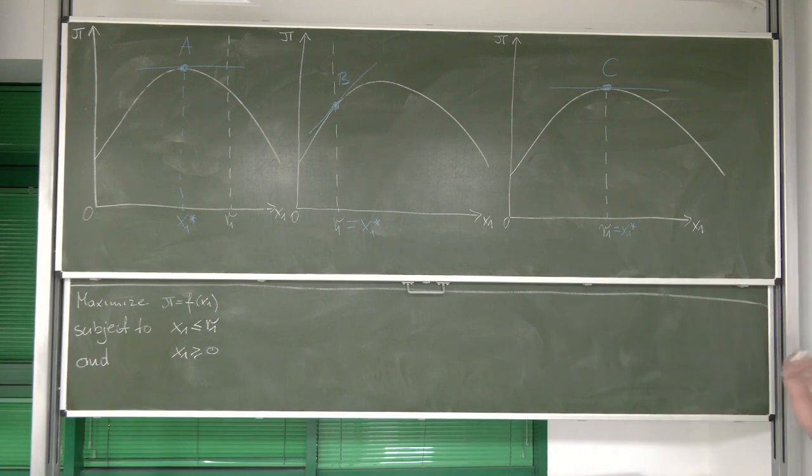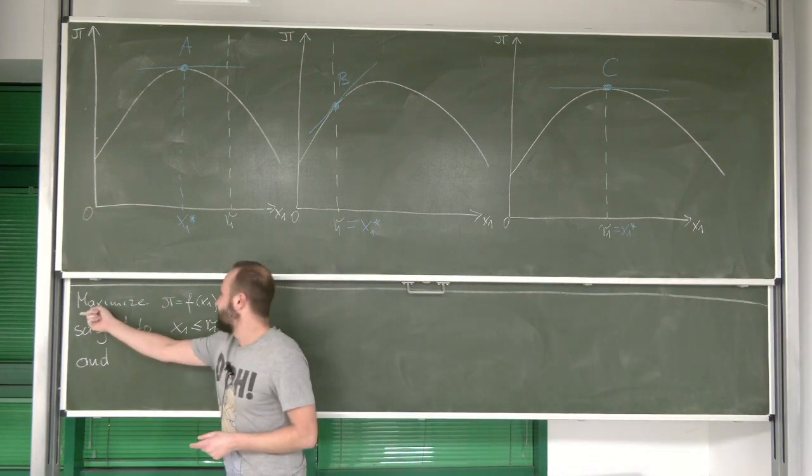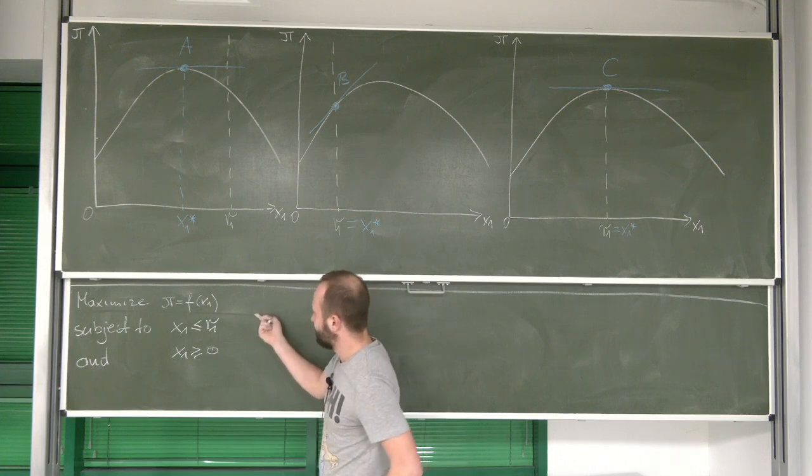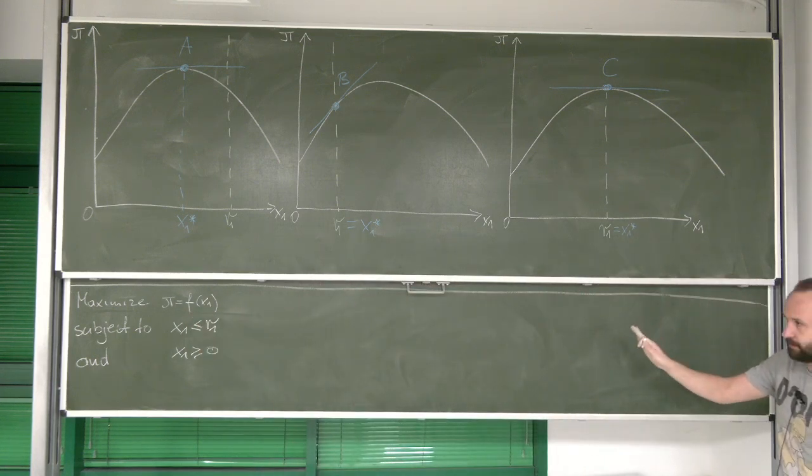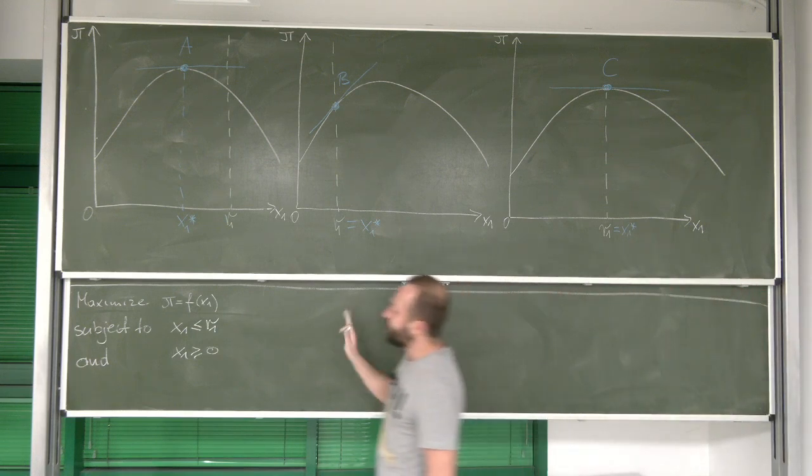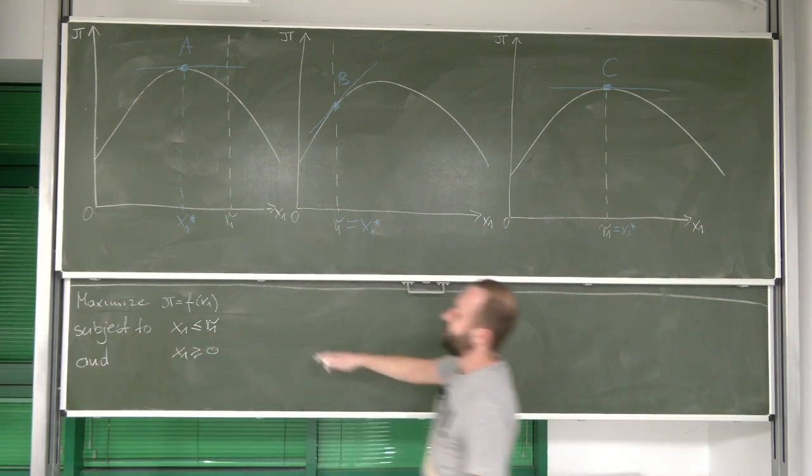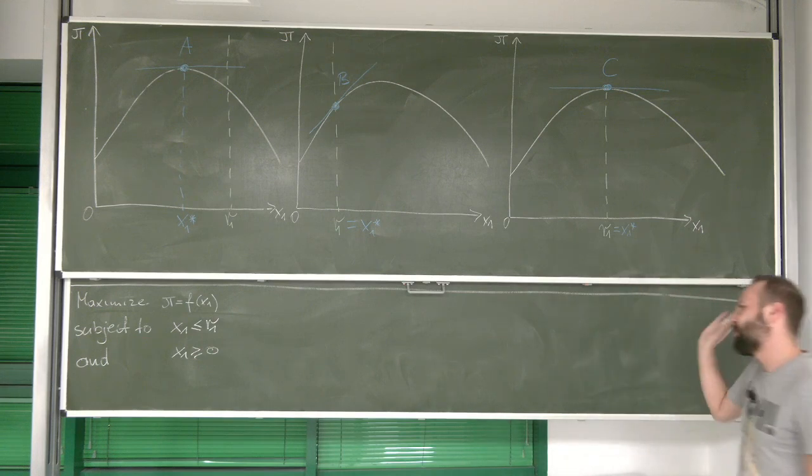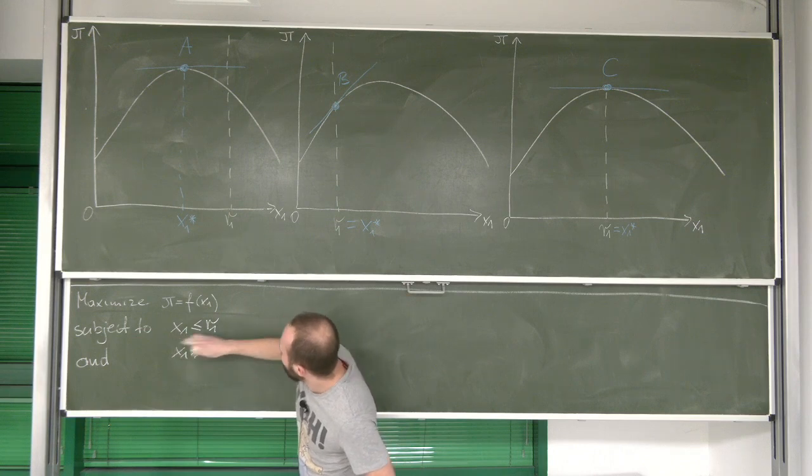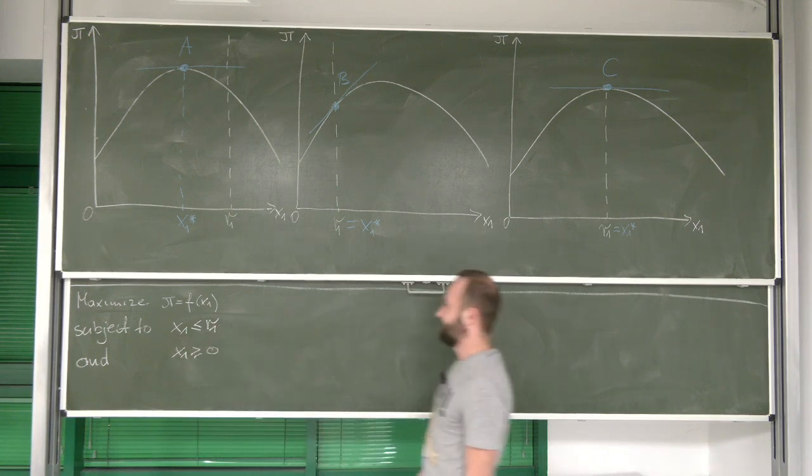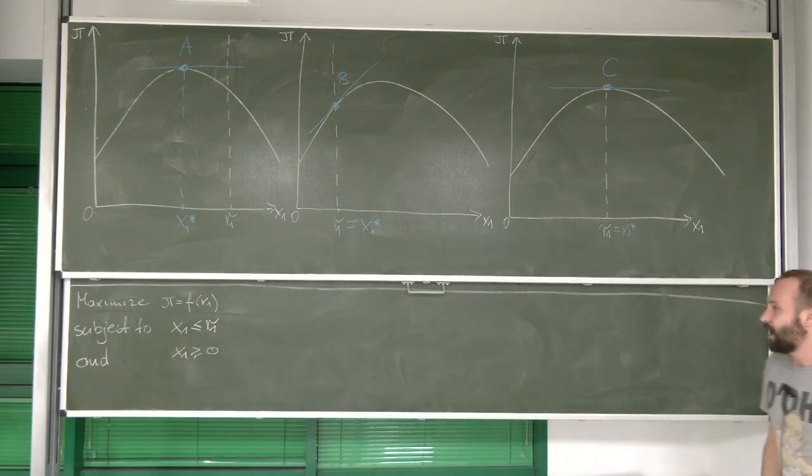So let's do the simplest problem possible. We need to maximize some function f of x1, just one variable, and we've got just one inequality constraint. The simplest possible, because we just require x1 to be lower than some r1.